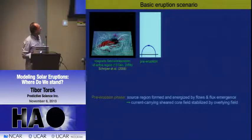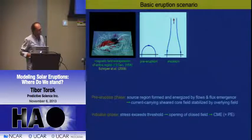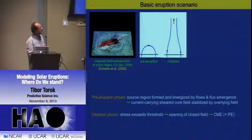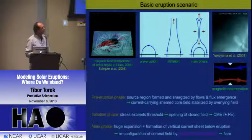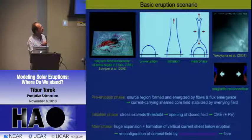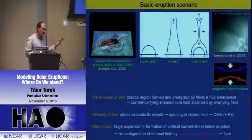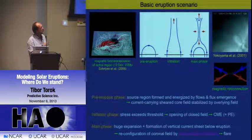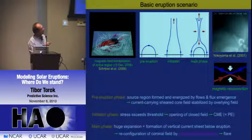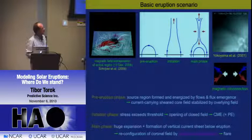However, since the field is constantly stressed and there is new emergence, at some point the stressing may exceed some threshold. When that happens, the field catastrophically opens up—that is the initiation of the eruption. Then in a later phase, as the field is stretched out and these field lines are oppositely directed, you create a large-scale vertical current sheet. Finally, reconnection occurring in this current sheet is what causes the flare.